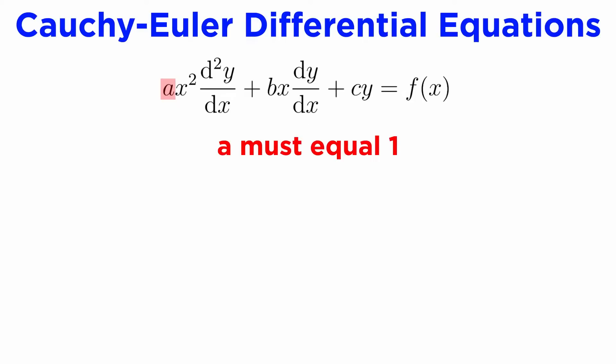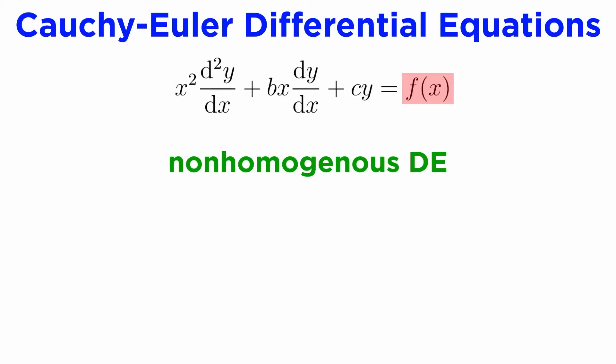Notice that the standard form requires we have a leading coefficient of 1 in front of the second derivative term. On the right side, we can have any function f of x, which will make this non-homogeneous in general.